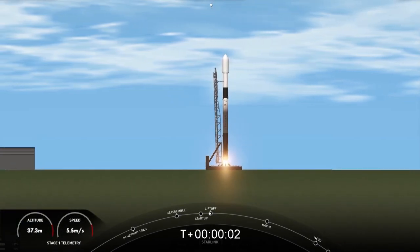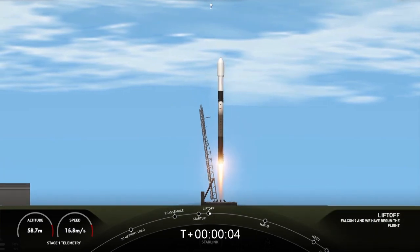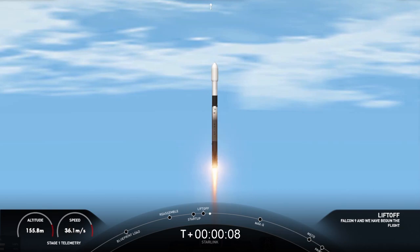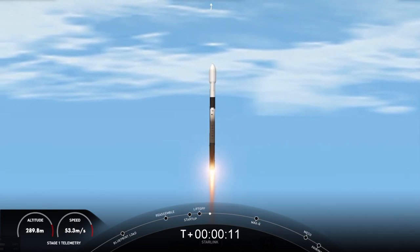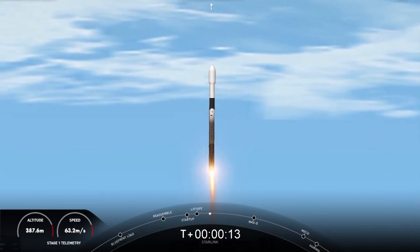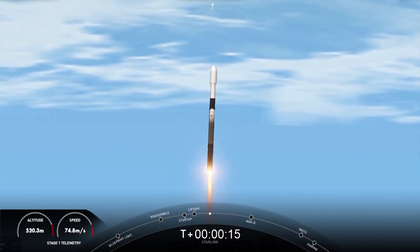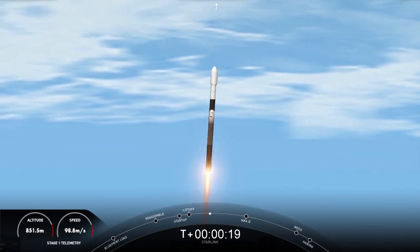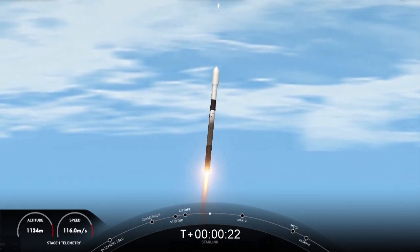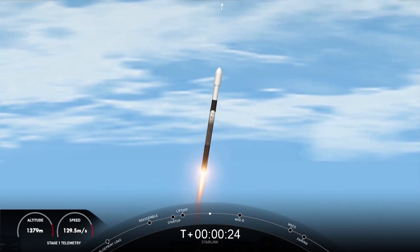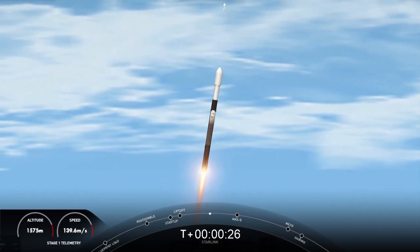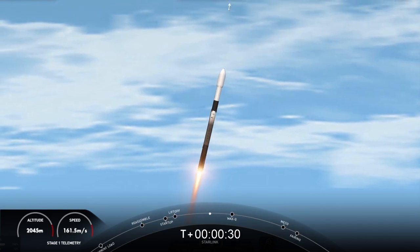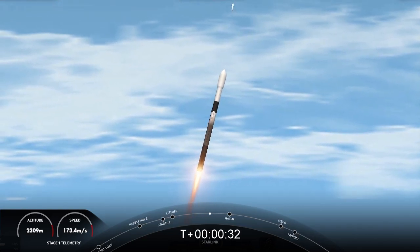And liftoff of Falcon 9, Starlink Ford at 11. T-plus 42 seconds into flight, Falcon 9 has successfully lifted off from Vandenberg Space Force Base, carrying our stack of 50 Starlink satellites to orbit. A moment ago, we began to throttle down the engines on the first stage in preparation for Max-Q. This is where the vehicle will experience the highest amount of pressures during ascent.